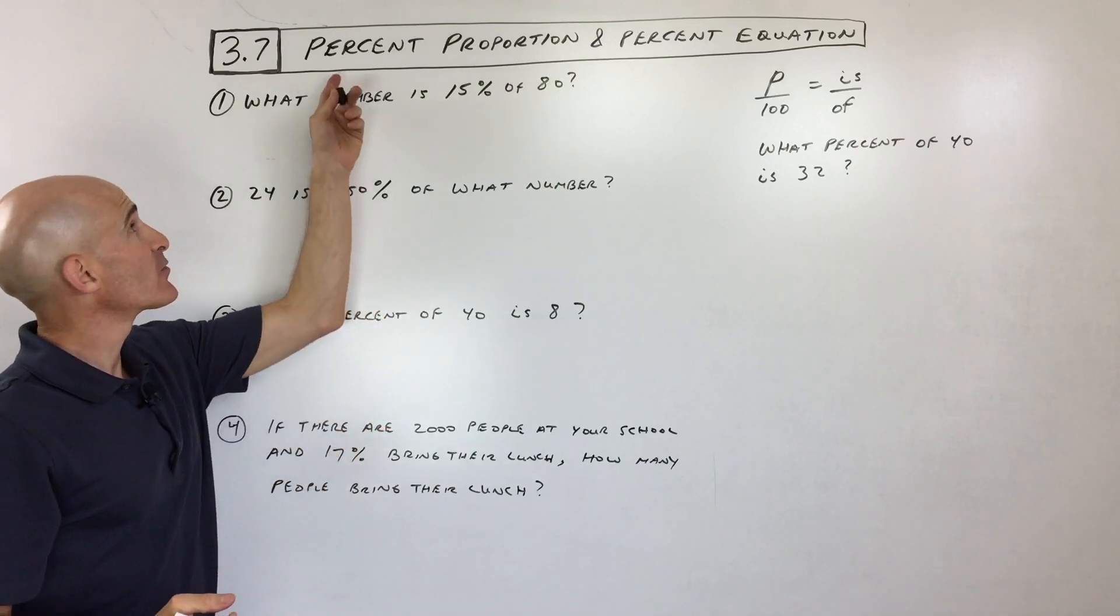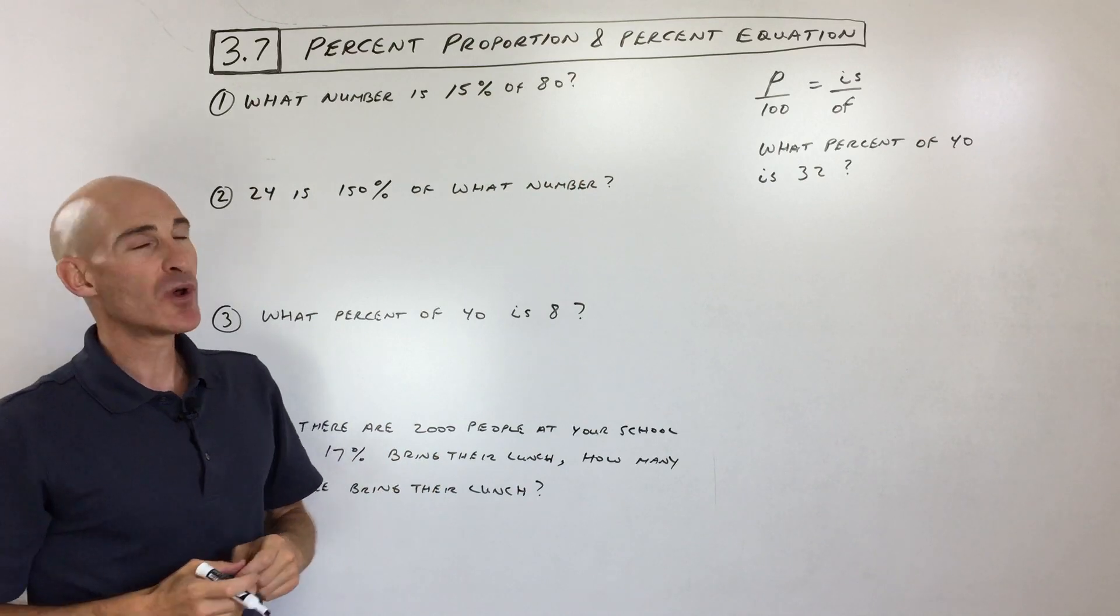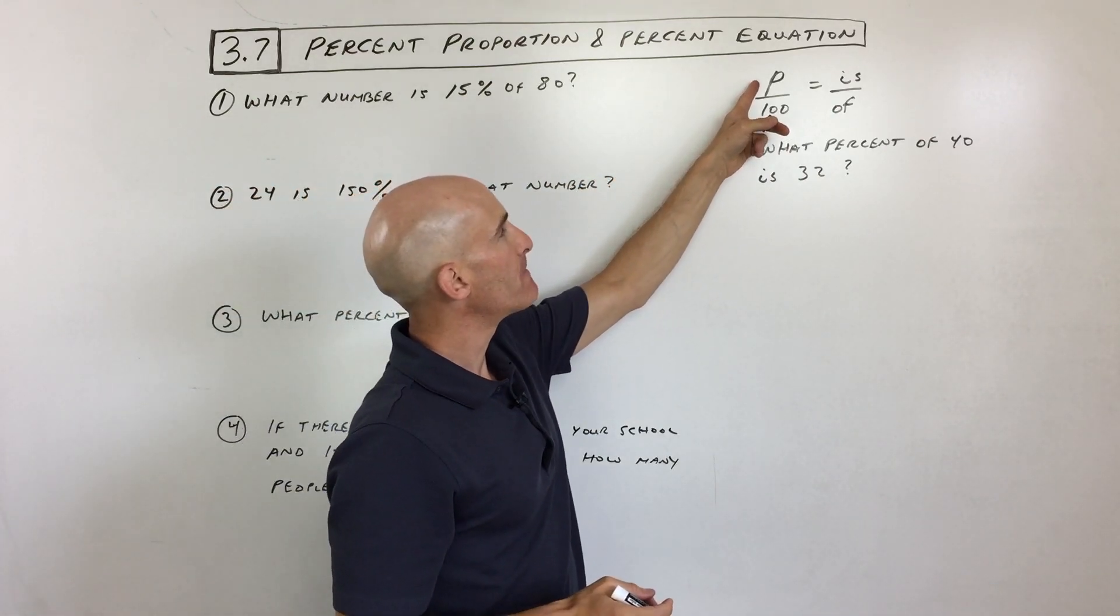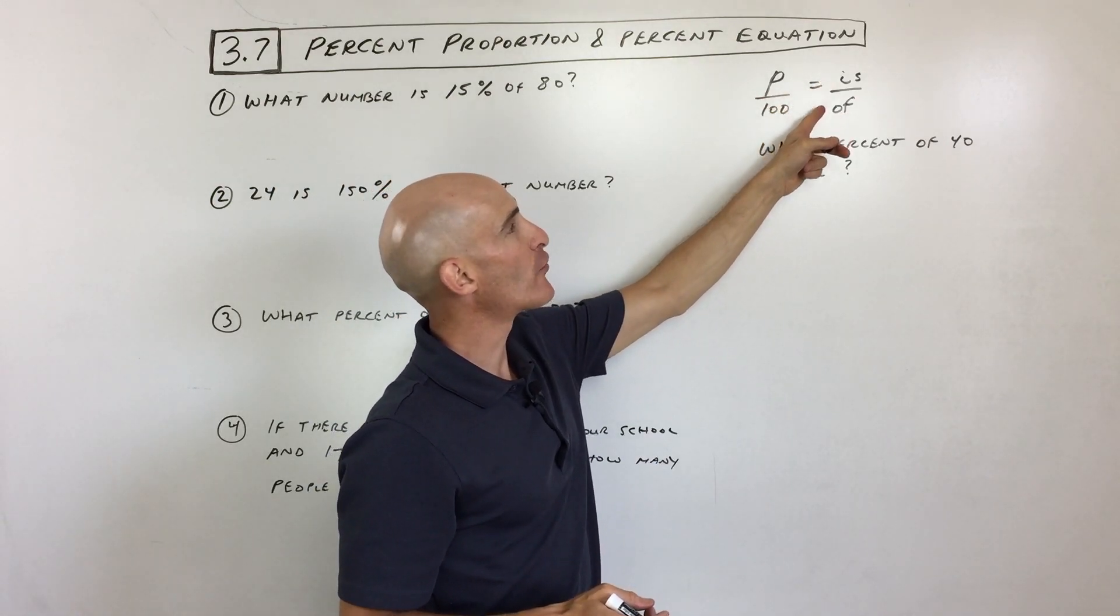Okay, cruising right along, we're on 3.7. We're going to talk about percent proportions and percent equations. So what exactly is a percent proportion? Well, that's this guy right over here. It's P, which represents the percent, divided by 100 equals is over of.